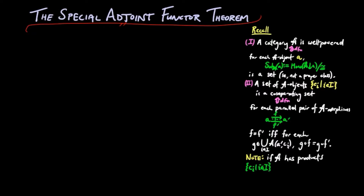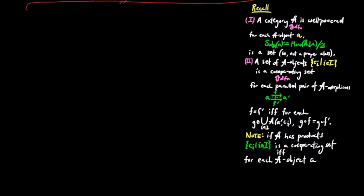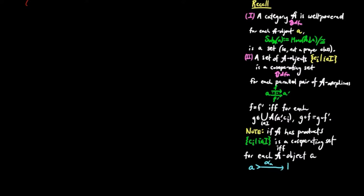With products assumed, a set of objects C_I is co-separating if and only if for each A-object A, the morphism alpha — defined by the universal mapping property of the product of C_I powers indexed by the set of A-morphisms from A to C_I — is a monomorphism, such that post-composing by the projection π_{IG} gives back G.